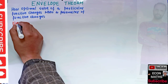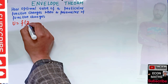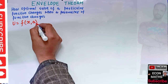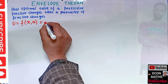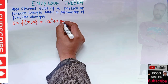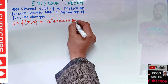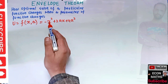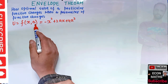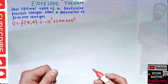Let's say we have a function u, which is a function of a choice variable x and also a parameter a, which equals minus x squared plus 2ax plus 4a squared. So we have a function of one variable x that depends upon a parameter a.